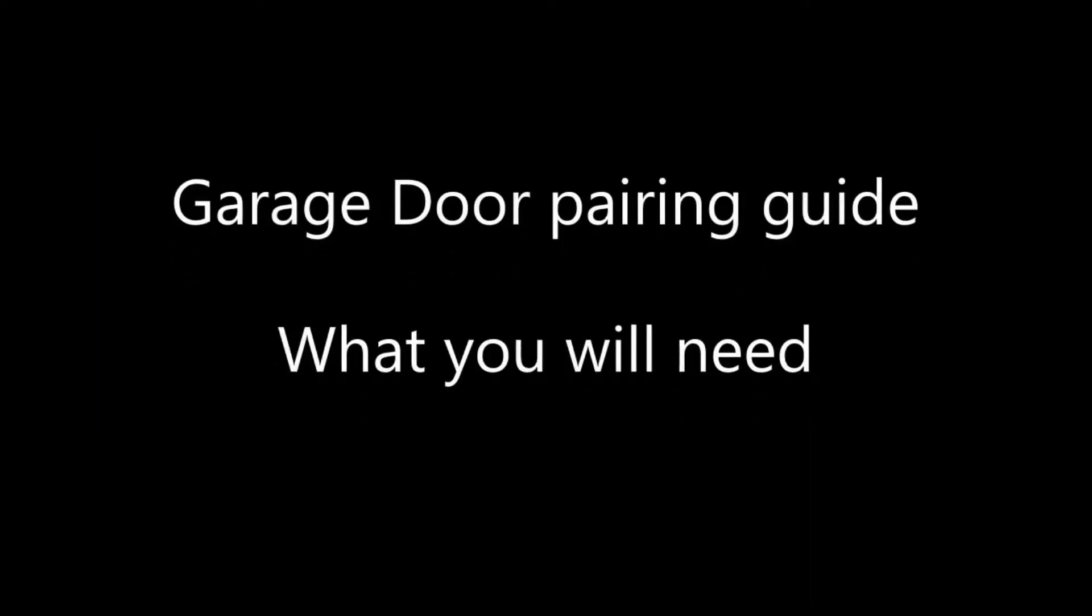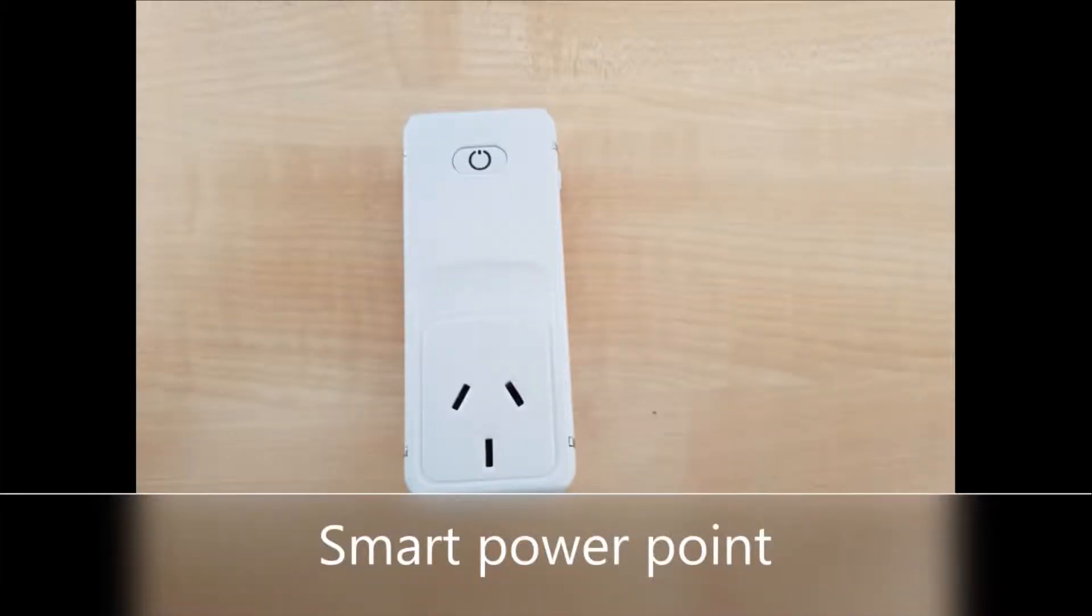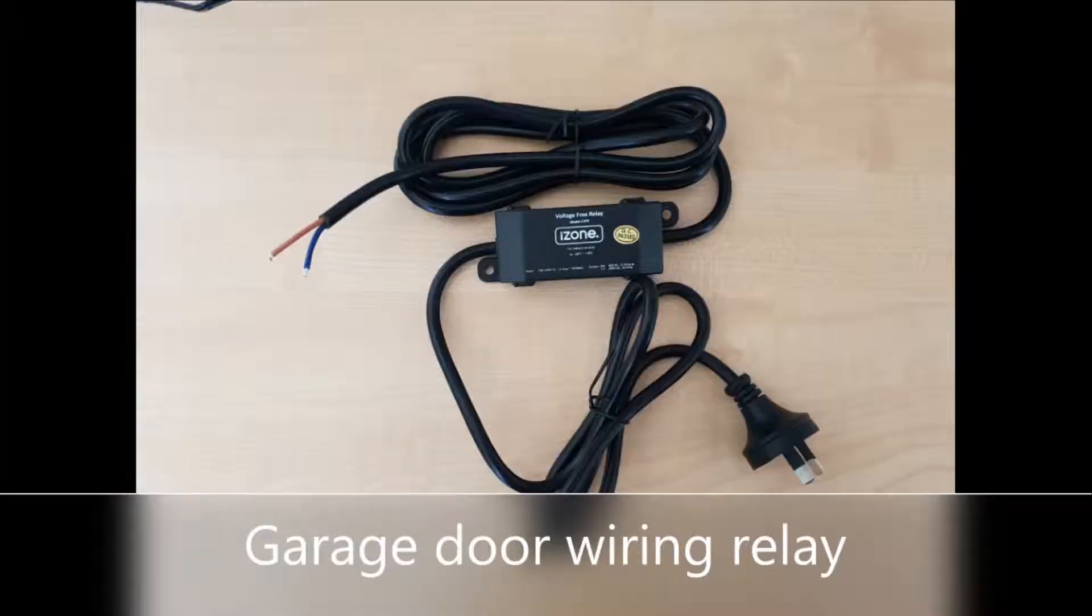To configure your garage door to your existing iZone system, you will need a smart power point, the reed switch, and a garage door wiring relay.